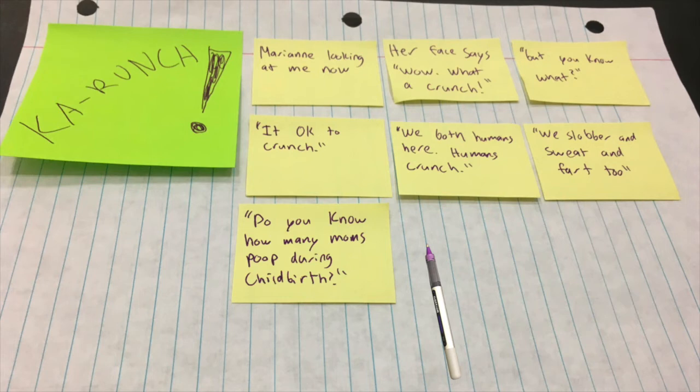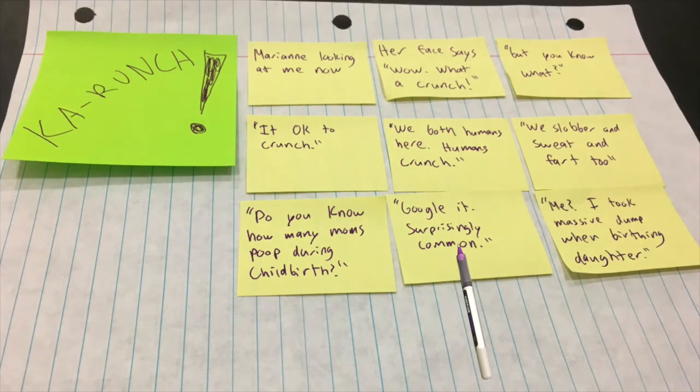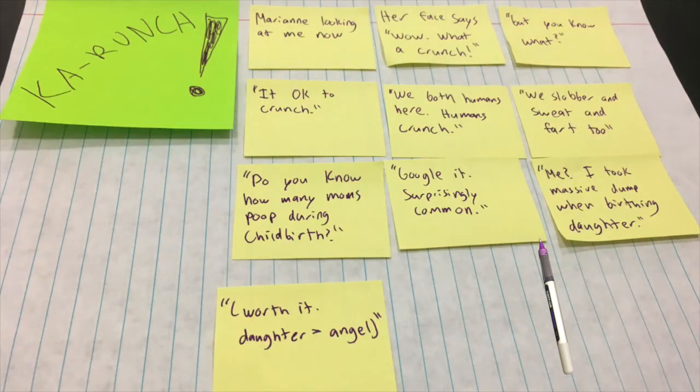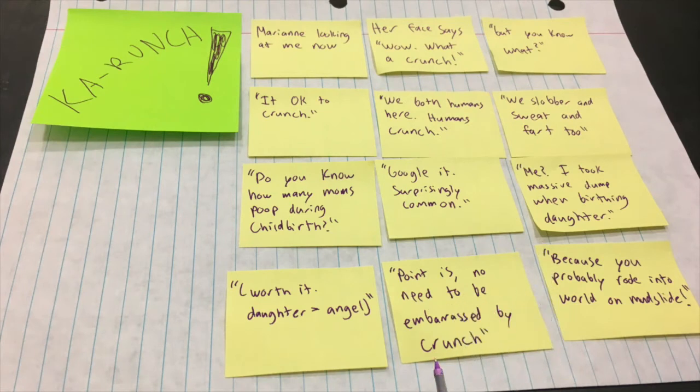Ah, you know what? I don't want to think about that. Okay. Google it. Surprisingly. Come on. Mia took a massive dump when birthing daughter. What? We're worth it. Daughtery is greater than angel. What? Point is, no need to be embarrassed by crunch. Because you probably rode into a world on mudslide. Why?